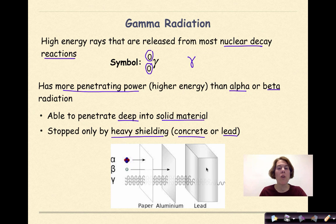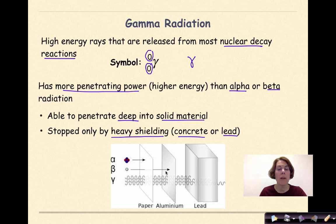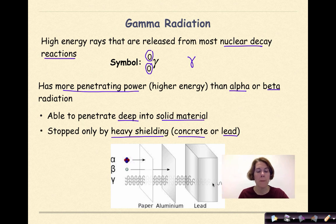Here we have an overall comparison of penetrating power. Alpha particles have only small penetrating power, beta particles have more, and gamma radiation has the most penetrating power of all.